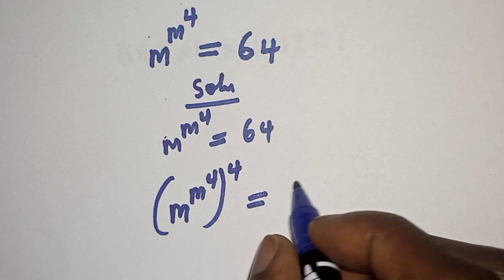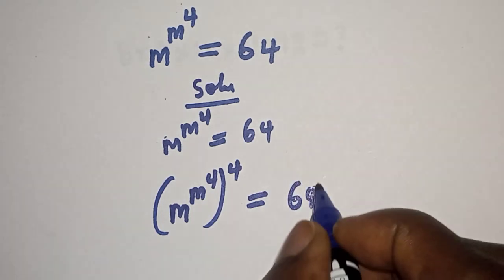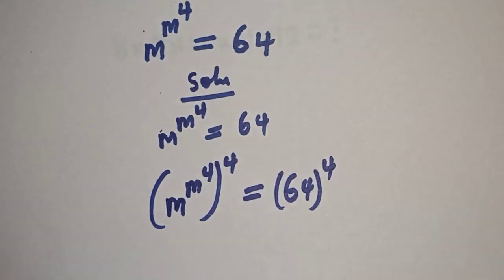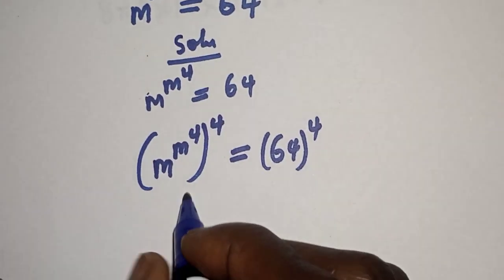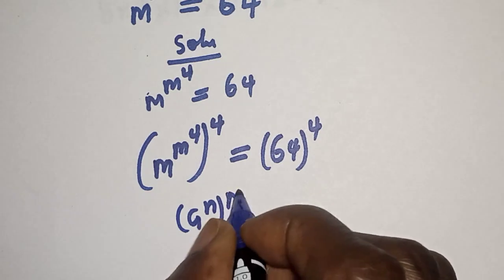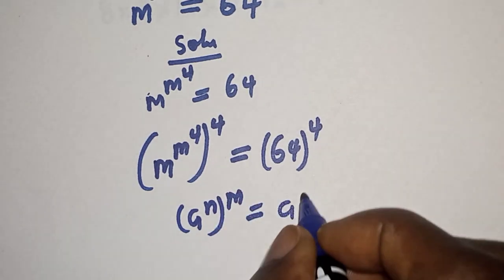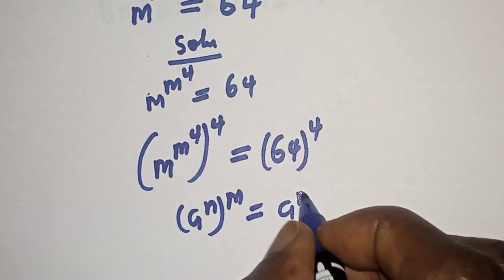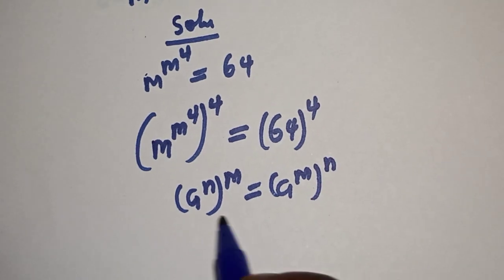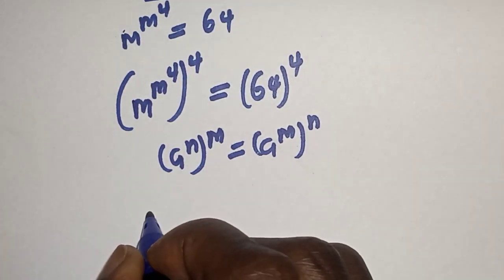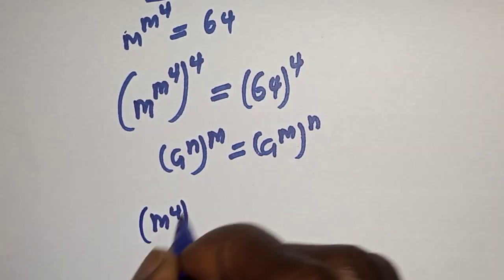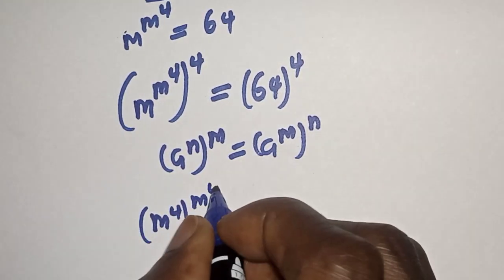This is equal to 64 raised to the power of 4. Now take note of this rule: if you have a raised to power m, to the power of n, then here we have m raised to power 4 to the power of m raised to power 4.